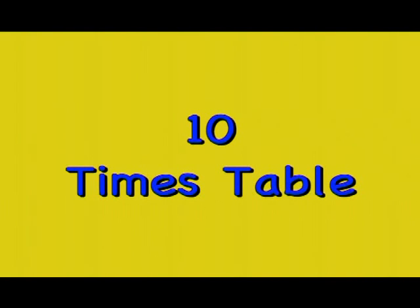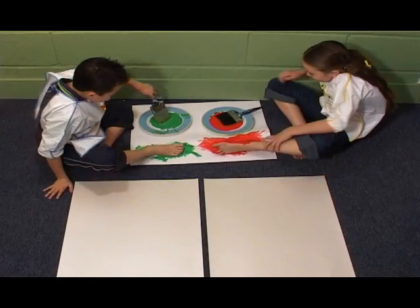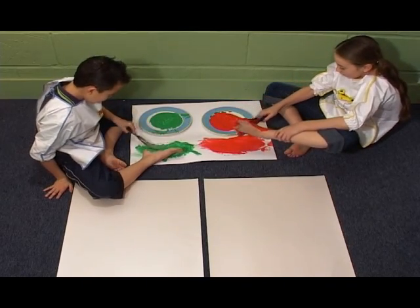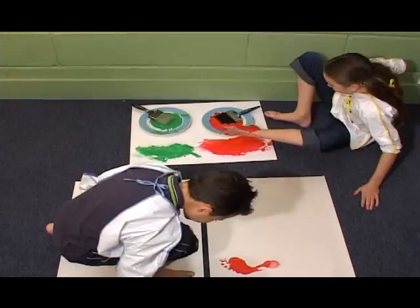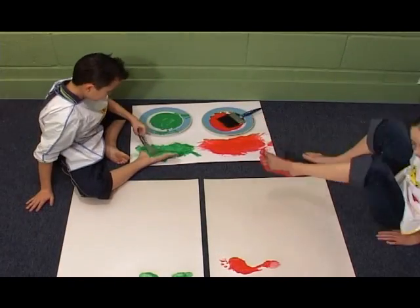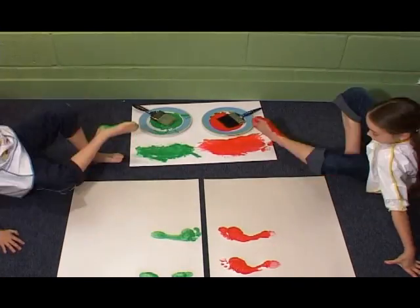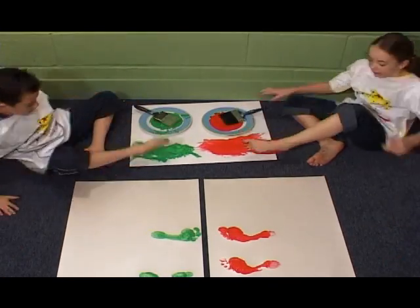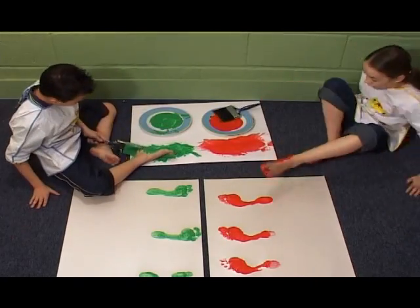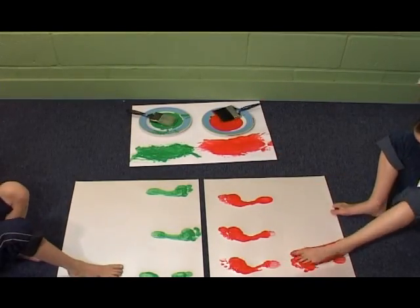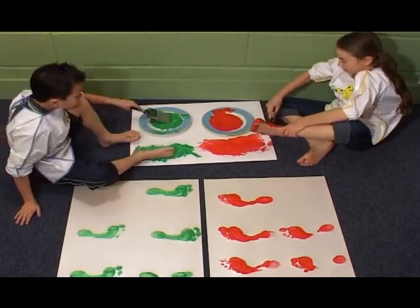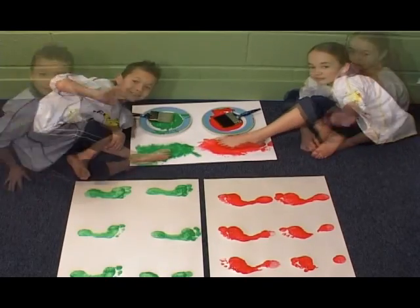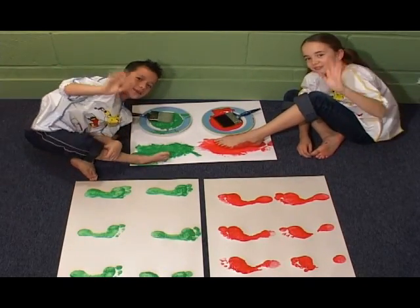The 10 times table. You can make a set of footprints to represent the 10 times table. Each set of footprints has 10 toes. Paint the bottom of your feet and then press them onto a piece of card. A finished set of footprints with 10 toes.